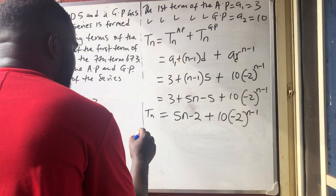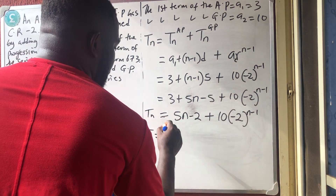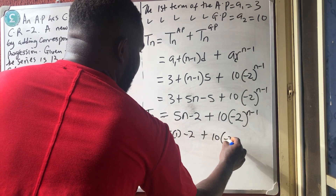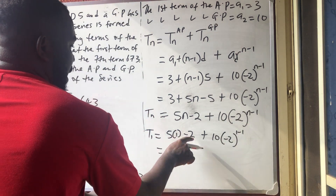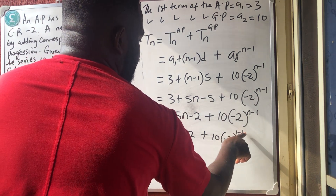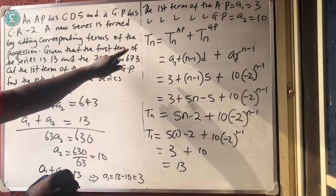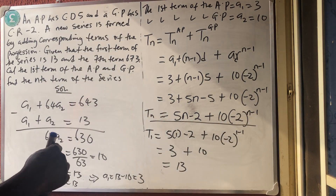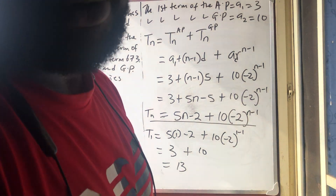Let's verify: when N equals 1, we get 5 times 1 minus 2 plus 10 times minus 2 to the power 0, which is 5 minus 2 plus 10 times 1, giving 3 plus 10 equals 13. This matches the given first term of 13, so the nth term of the new series is confirmed as 5N minus 2 plus 10 times minus 2 to the power N minus 1. Thank you very much for watching. Please like, share and subscribe. God bless you.